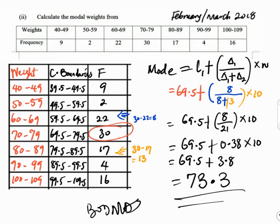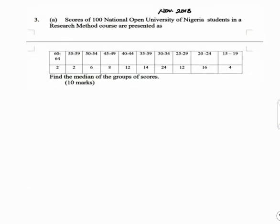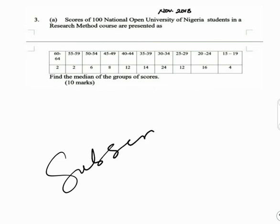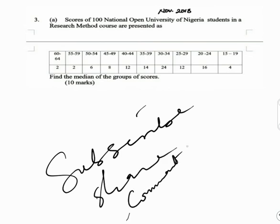The modal weight is 73.3 — don't forget to include the units (e.g., kilograms) if given. You have a second question to try out using the methods we have covered. Please don't forget to subscribe, share, and comment. Thank you for watching and thank you for studying with us.